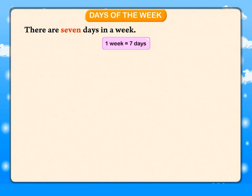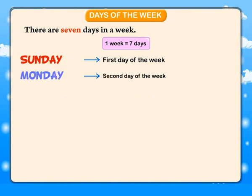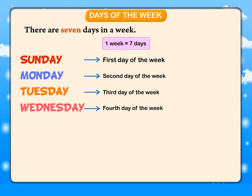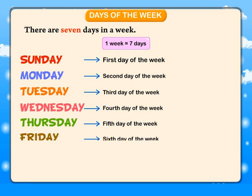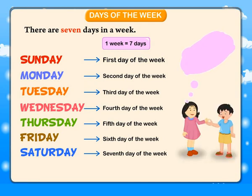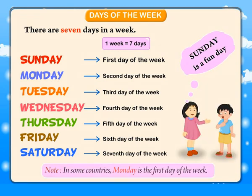Days of the week. There are 7 days in a week. One week is equal to 7 days. Sunday — first day of the week. Monday — second day. Tuesday — third day. Wednesday — fourth day. Thursday — fifth day. Friday — sixth day. Saturday — seventh day of the week. Sunday is a fun day. Note: in some countries, Monday is the first day of the week.